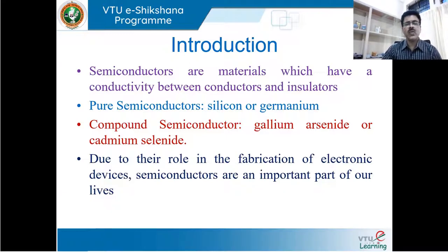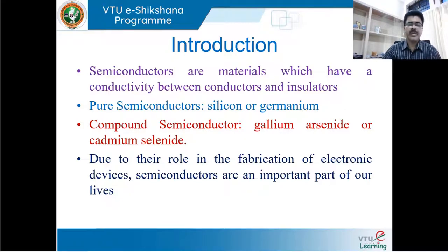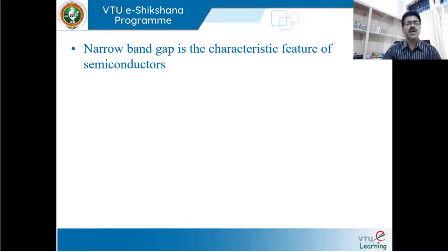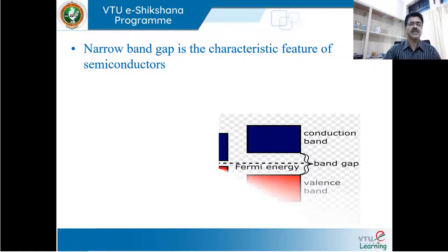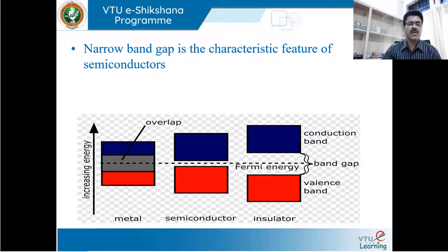Due to their role in the fabrication of electronic devices, semiconductors are a very important part of our lives. We use them in TVs, mobile phones, and computers — all applications of semiconductor devices. These semiconductors have a very narrow band gap, and that is the characteristic feature of the material. The energy gap of the semiconductor is less than around 3 electron volts.